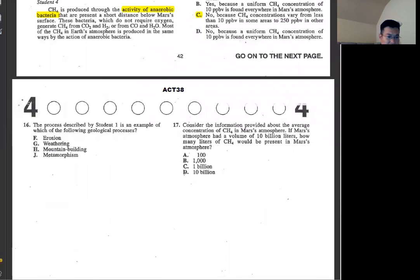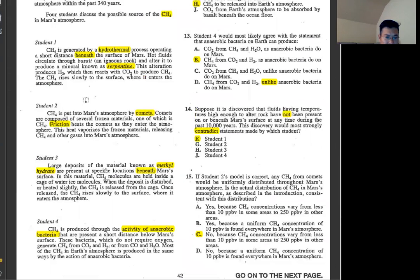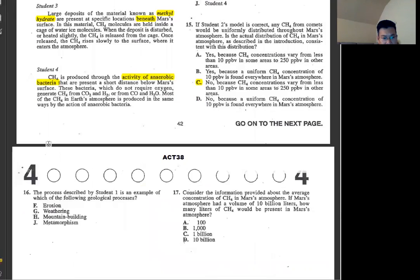Number 16, the process described by student 1 is an example of which of the following? Student 1 is talking about how it changes, because the rock changes into mineral, serpentine. So changes means metamorphism. Meta means transform and morph means form.